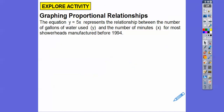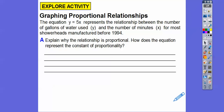Let's get started. The equation y equals 5x represents the relationship between the number of gallons of water used — that's our y — and the number of minutes, which is x, for most showerheads manufactured before 1994. So if it's 5 minutes, then 5 times 5 tells us the showerhead used 5 gallons. Explain why the relationship is proportional, and how does this equation represent the constant of proportionality?